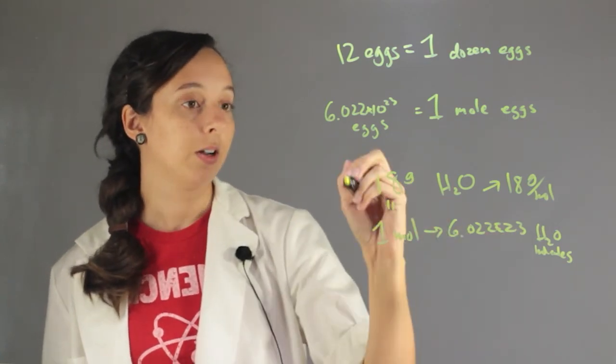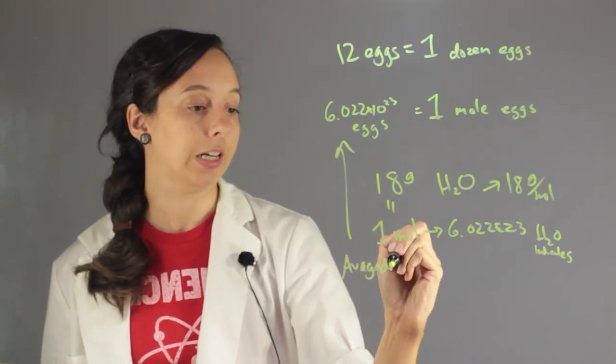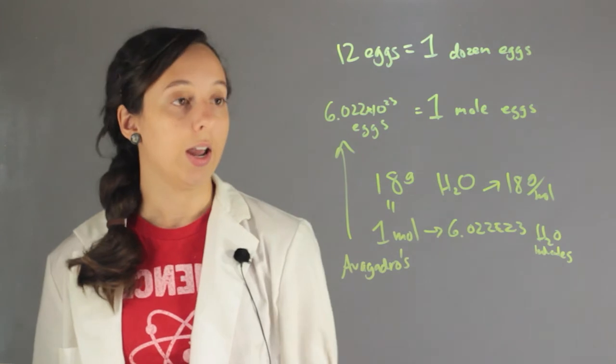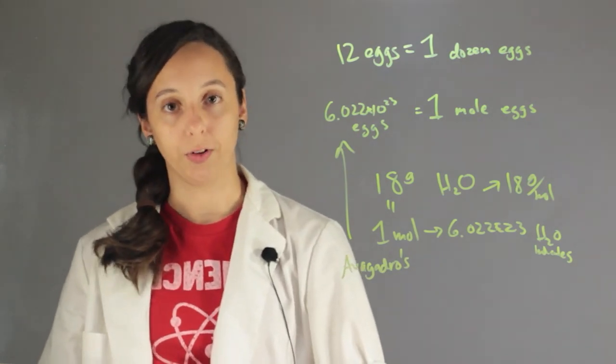And this number is called Avogadro's number. He invented it. And so I'm Robin Higgins and this has been why the mole is helpful in chemistry.